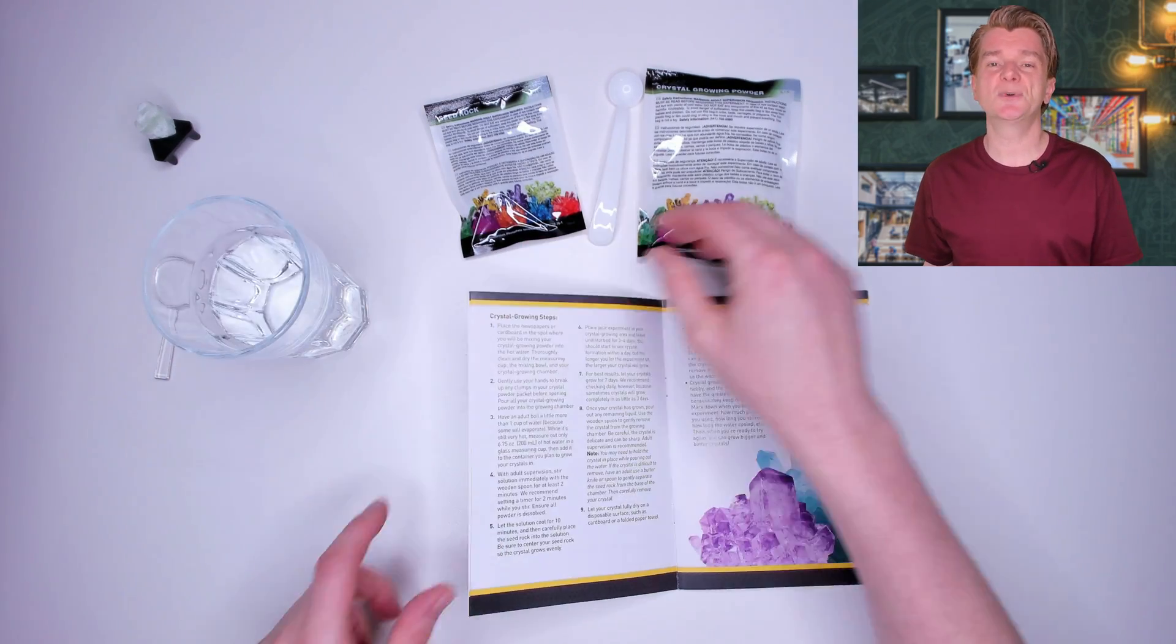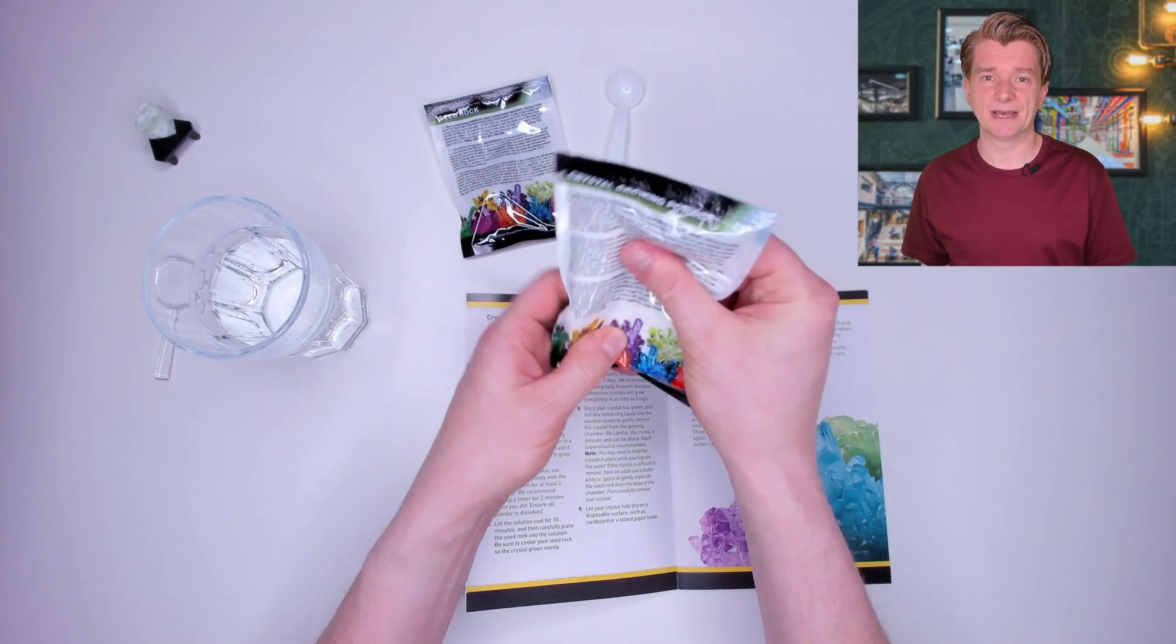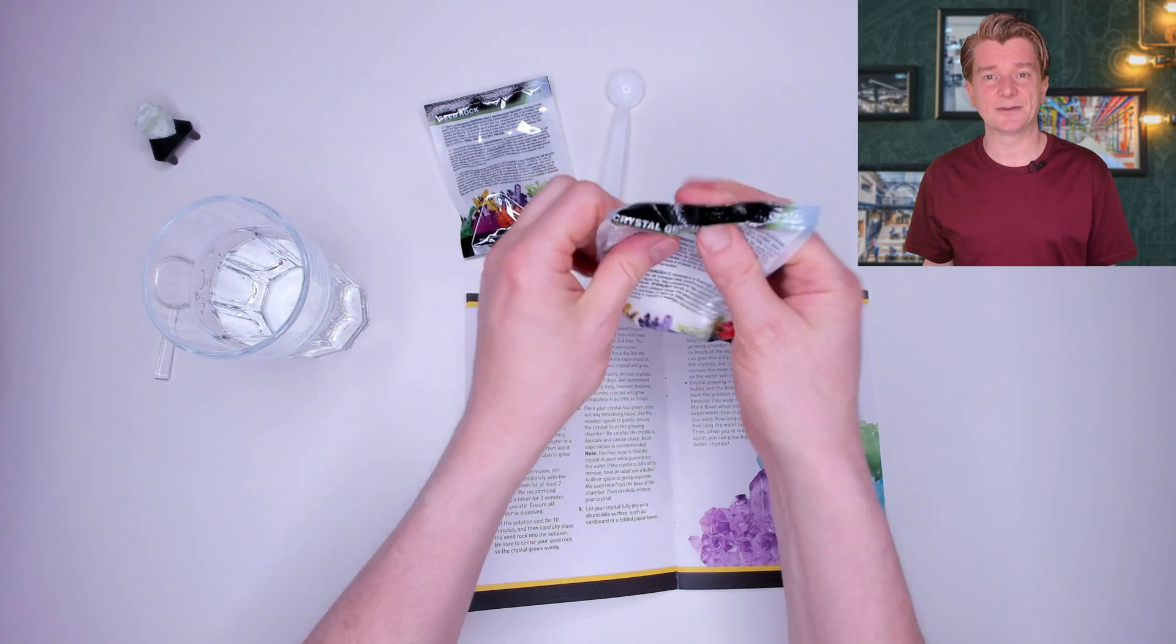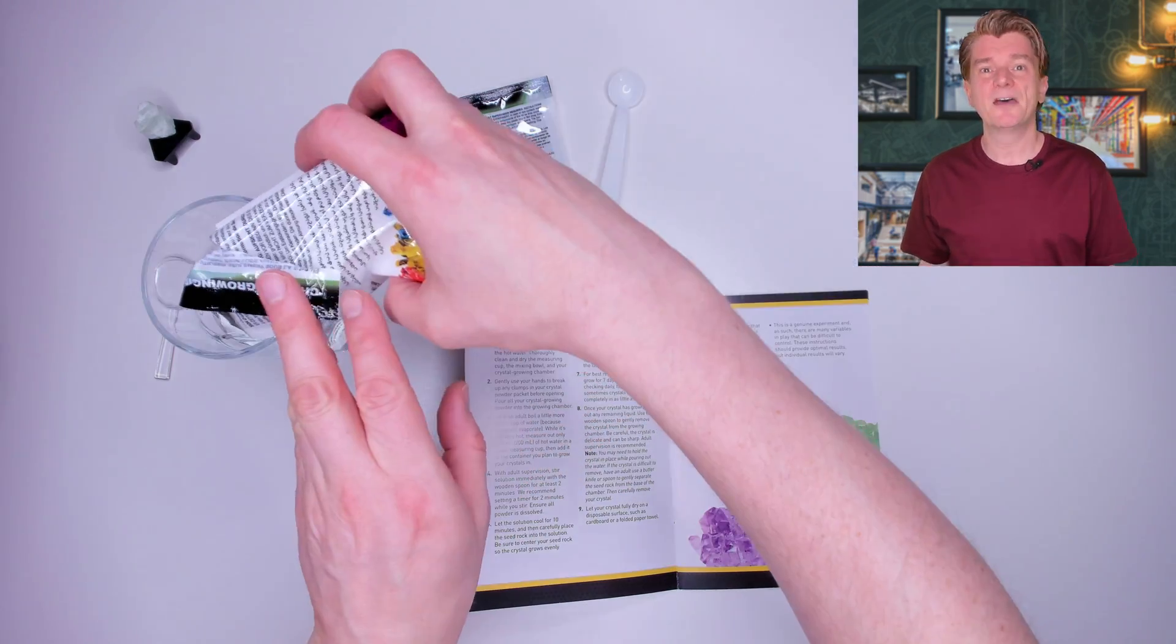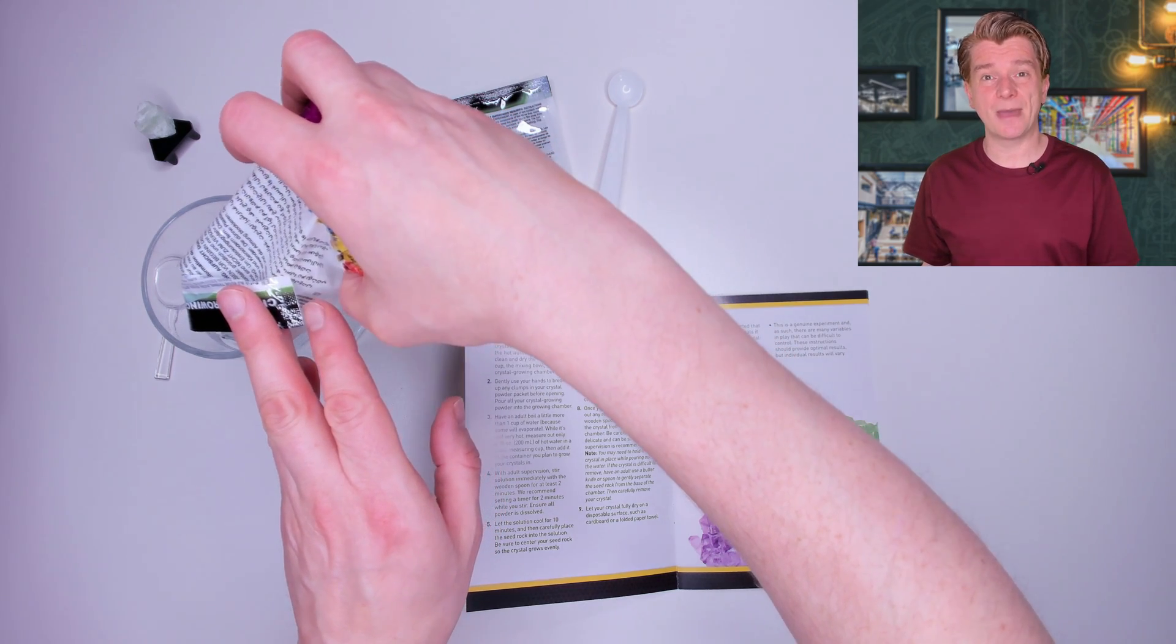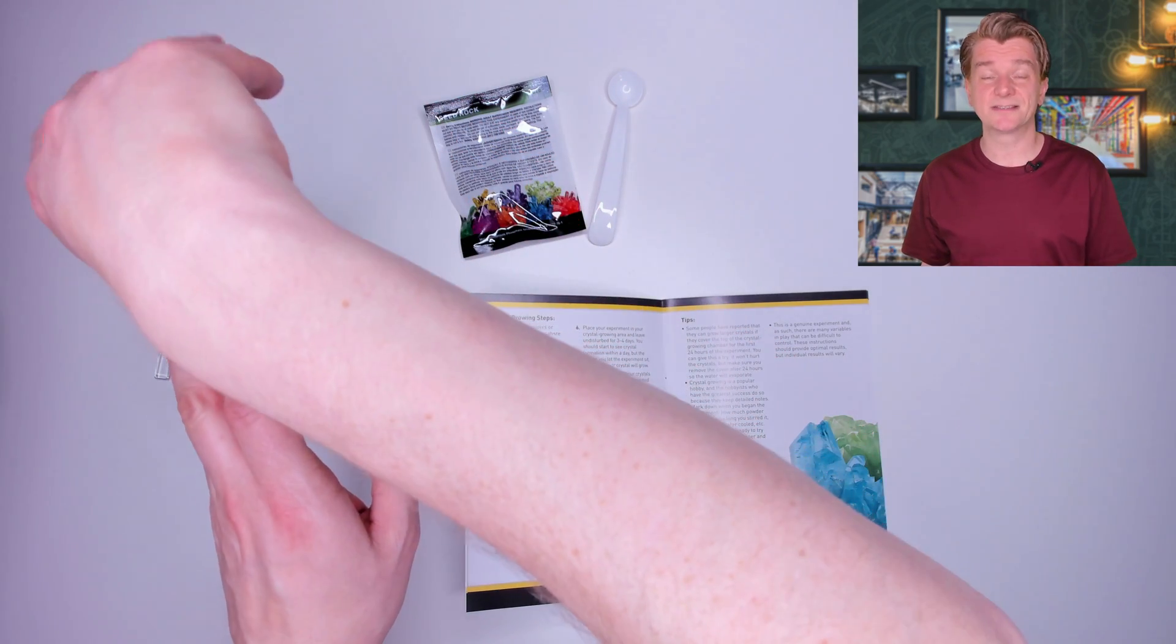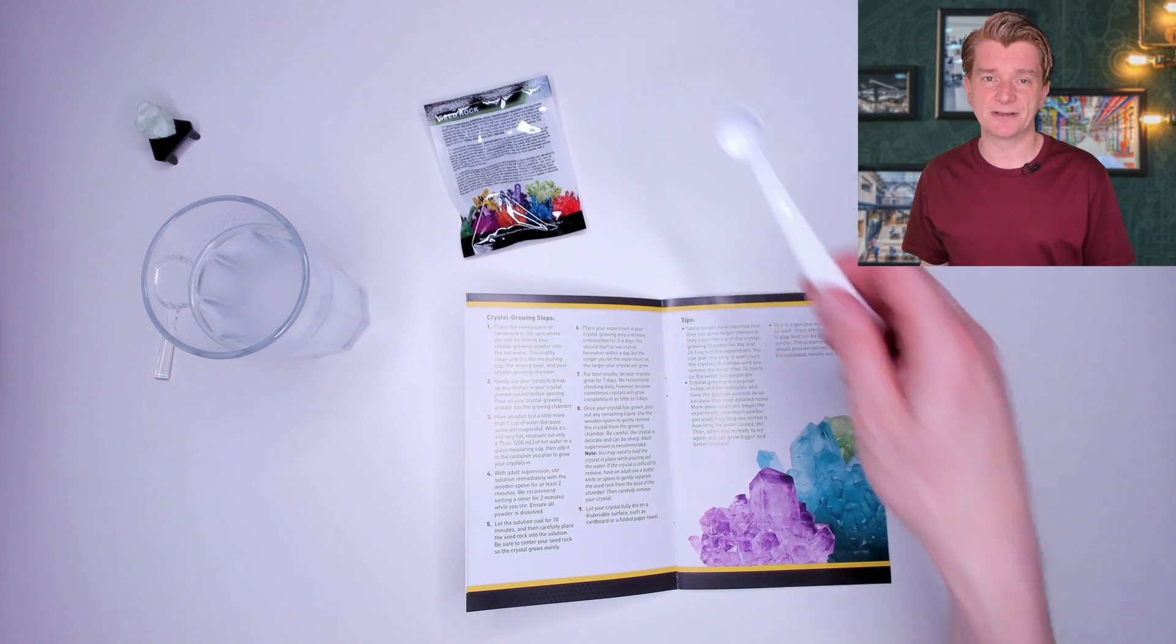We need a glass with 200ml of boiling water. This kit definitely needs adult supervision. You've got to pick the right kind of glass and be very careful not to get scalded. First step is to take the crystal ground powder and add the whole lot to the glass and stir for 2-3 minutes until it's completely dissolved.